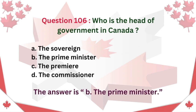Question 106: Who is the Head of Government in Canada? A. The Sovereign. B. The Prime Minister. C. The Premier. D. The Commissioner. The answer is B: The Prime Minister.